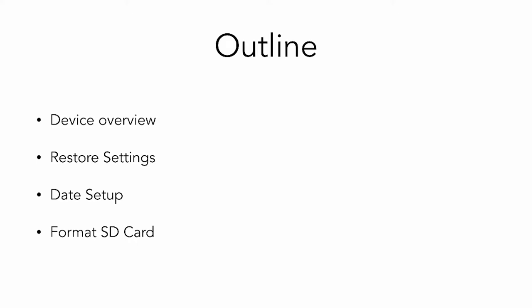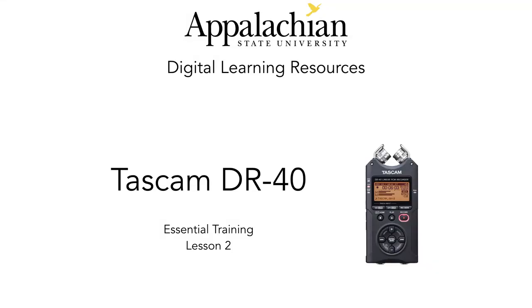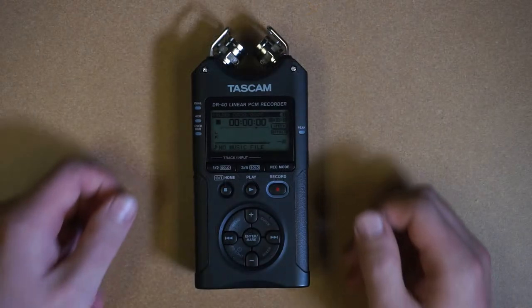In the last video we talked about the overview of the device, how to change the settings back to factory default, how to set up the date and time, and how to format the SD card. In this second Essentials training video, we'll be talking about how to change the record mode, how to change the record settings, and making your first recording. So let's get started.